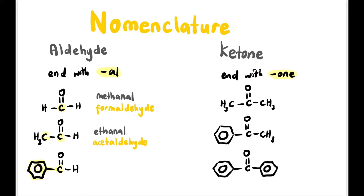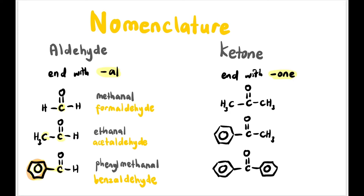Next, if we have a benzene ring with C double bond O — H, so the benzene ring becomes a substituent, so the name is phenyl, and the parent is methanal (C double bond O — H, one carbon only). The common name is benzaldehyde, which we already learned in the chapter on aromatic compounds.